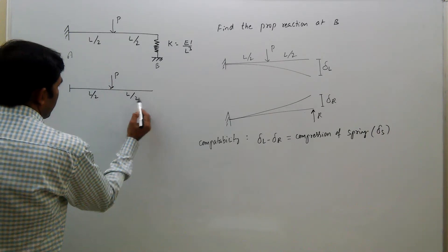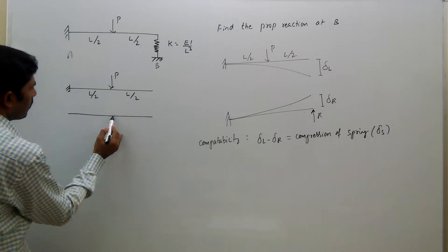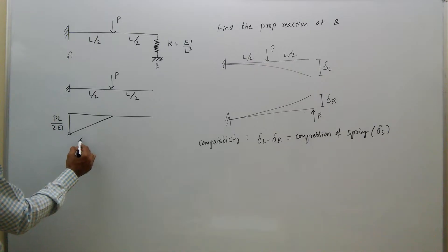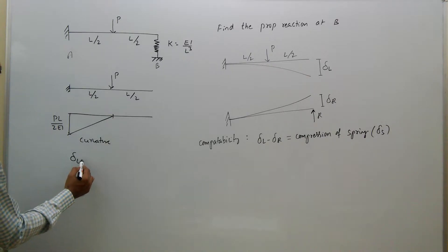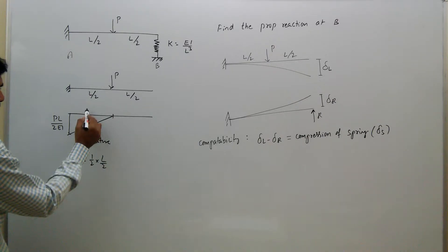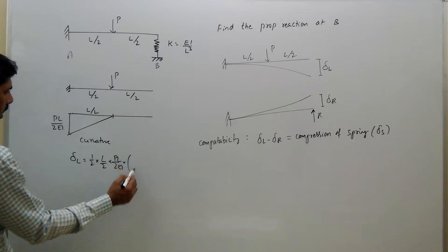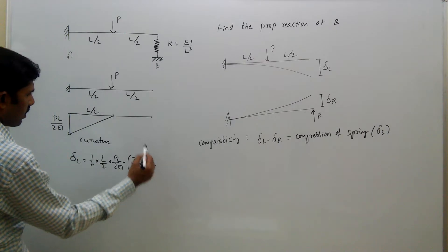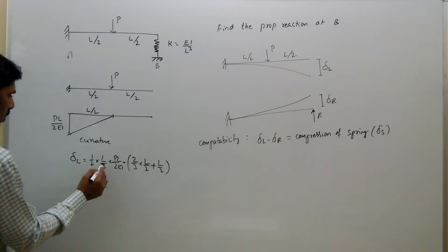The moment area method is suitable here. The bending moment at the load point is P·L/2. Dividing by EI gives the curvature diagram. Delta L equals half times (L/2) times (P·L/2·EI), and the centroid distance about point B is 2/3 of (L/2) plus L/2.